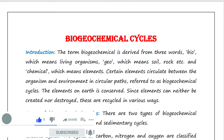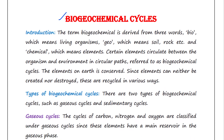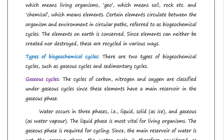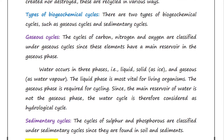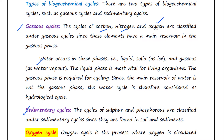In the previous lecture we talked about what are biogeochemical cycles. We saw that there are two types: gaseous cycles and sedimentary cycles. We have already talked about the water cycle, the carbon cycle, and the nitrogen cycle. Today we will talk about the oxygen cycle. Links are provided in the description box if you want to check those videos.